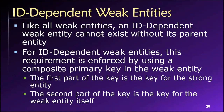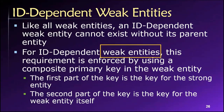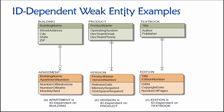An ID-dependent weak entity is a weak entity whose primary key consists, at least in part, of the primary key from the related table. This is a way of enforcing its weak entity status. The best way to understand this is just to see a diagram.